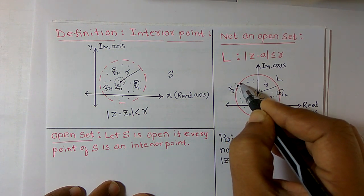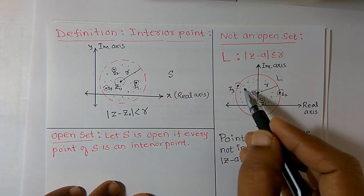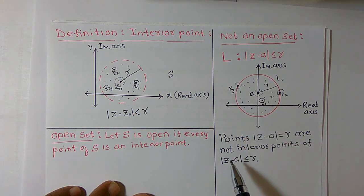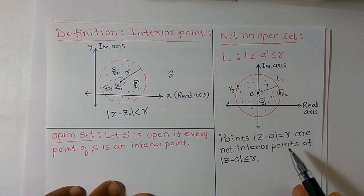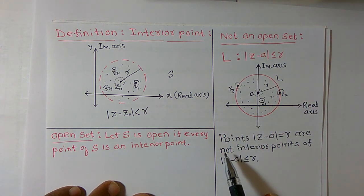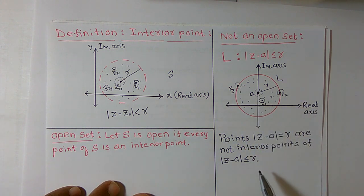Similarly, I can construct an open disk around z3. Some points belong to the set and some points do not belong to the set. Therefore I cannot call z2 or z3 interior points. Points where the modulus of z minus a equals r are not interior points of the set where the modulus of z minus a is less than or equal to r. This type of set is not an open set. I hope it is now clear what is meant by an interior point and what is meant by an open set or a set that is not open. Thank you.